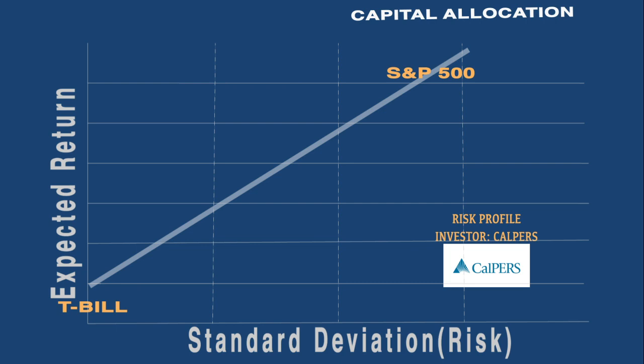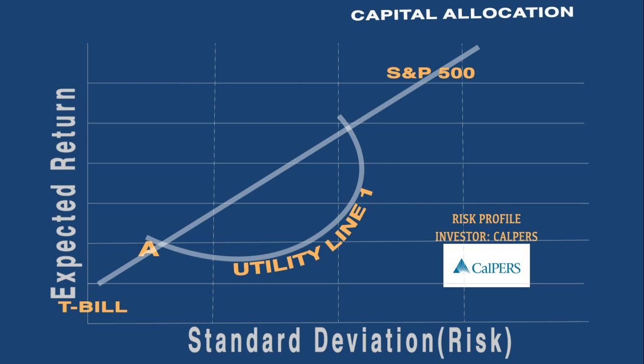We superimpose the utility function on the capital allocation line. The utility function intersects the line at points A and B, representing a certain level of utility on that indifference curve. If we push the utility function further out, we observe an increase in utility for the investor.